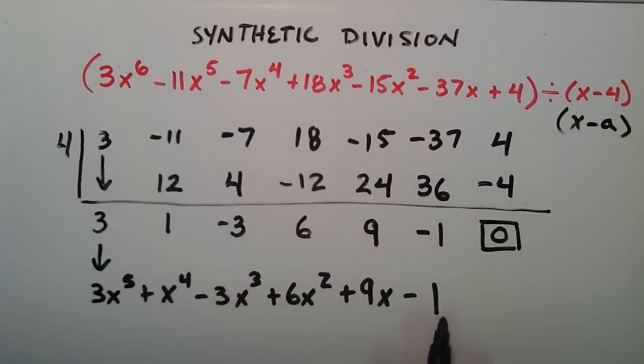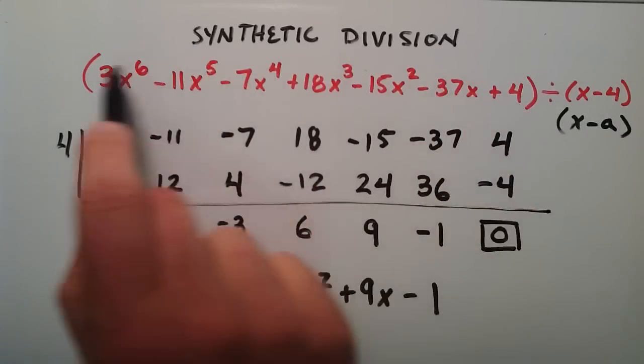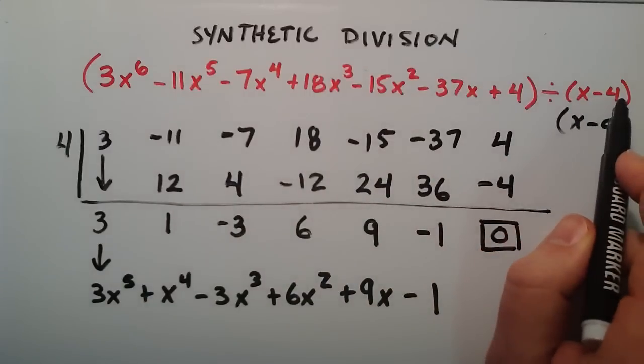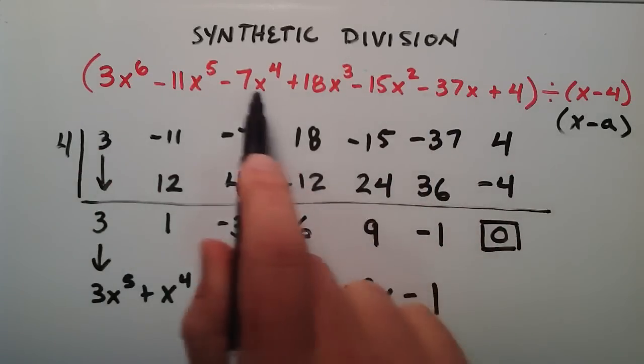So this is the answer. So that's much more simple than if we did this by long division. So basically all this nonsense right here divided by x minus 4 is equal to this down here. So that is really nice if we have some big ugly problem like this to solve.